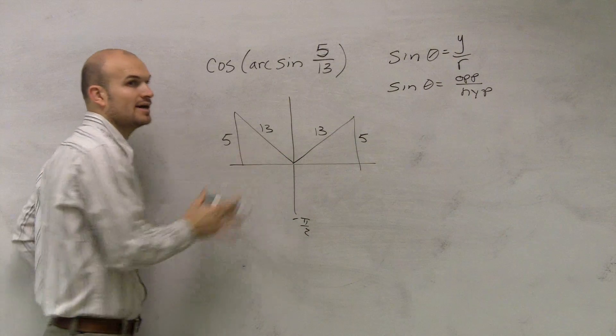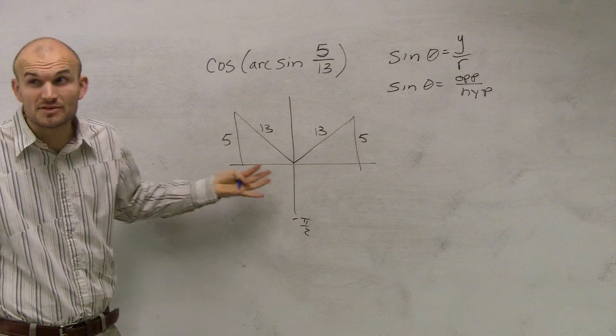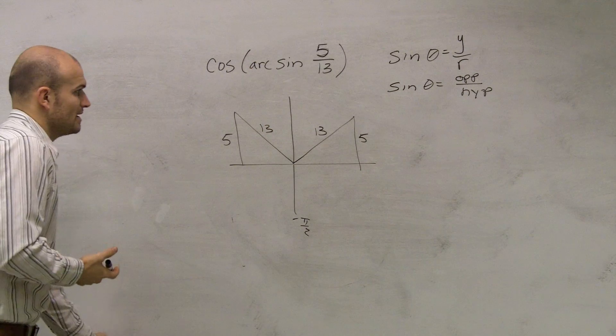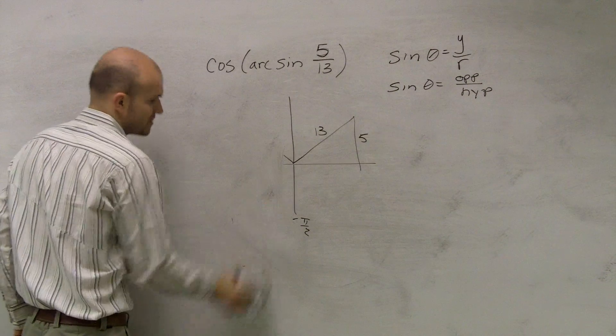The reason we have the inverse sine is it gives us a restriction that we have to only use this triangle because that is within our constraints. That's why we use the inverse sine - so I can say, I can't use this triangle. Otherwise, we'd have two answers and we wouldn't know which one to pick. Since I'm using inverse sine, I'm going to eliminate this triangle.